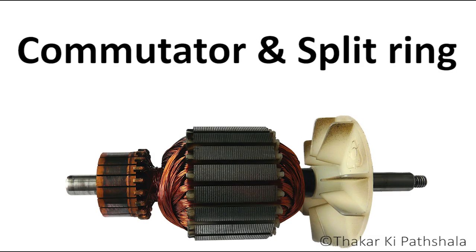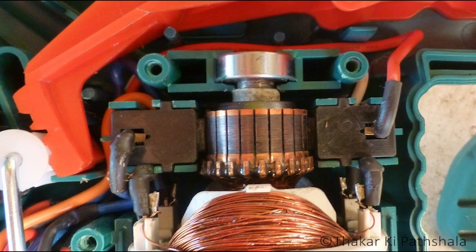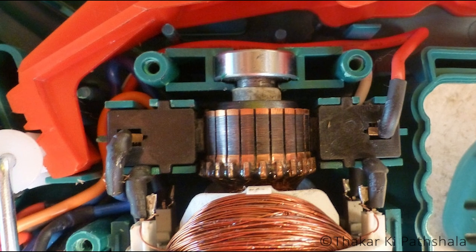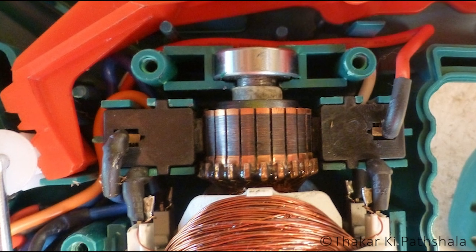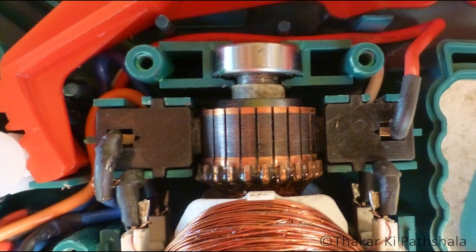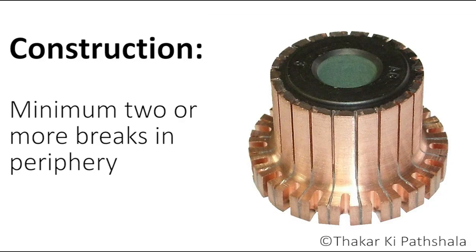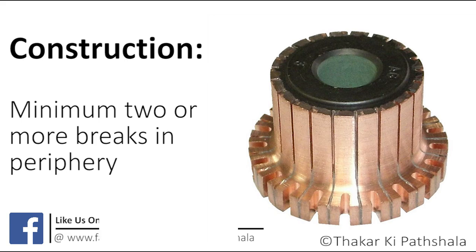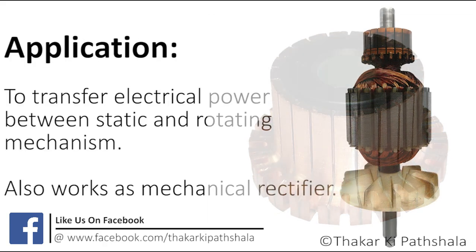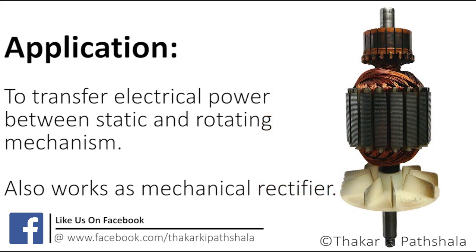Let's discuss about commutator and split ring. Commutator and split ring are both different names for the same thing. Commutator or split ring looks like this. It has a minimum of two or more breaks in its periphery.